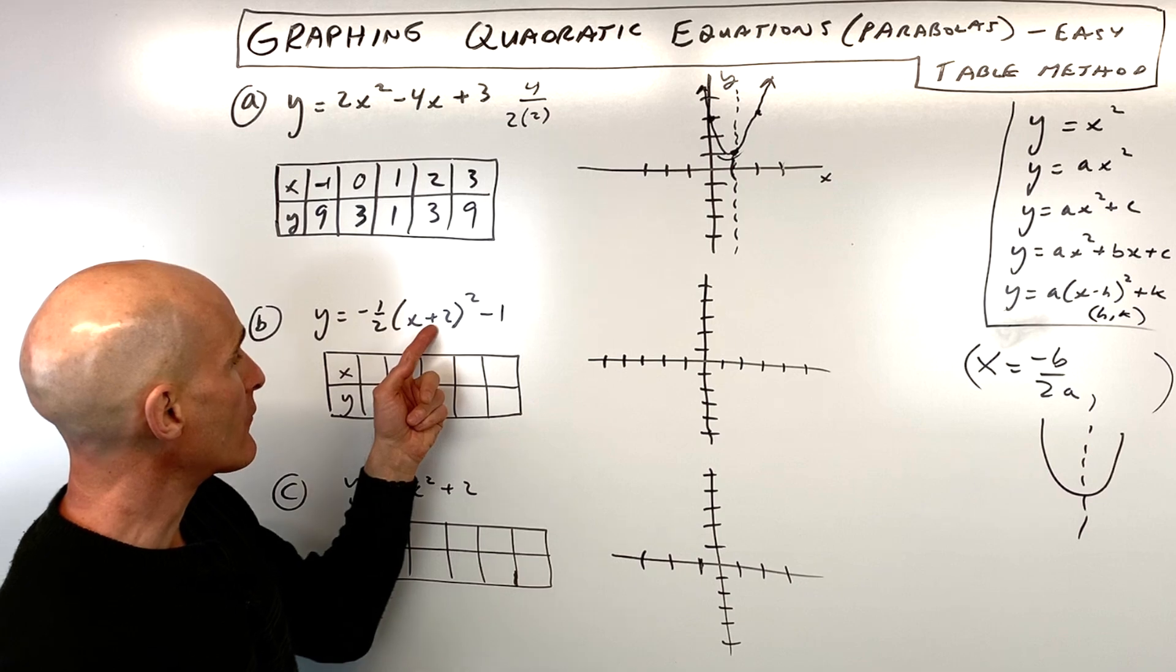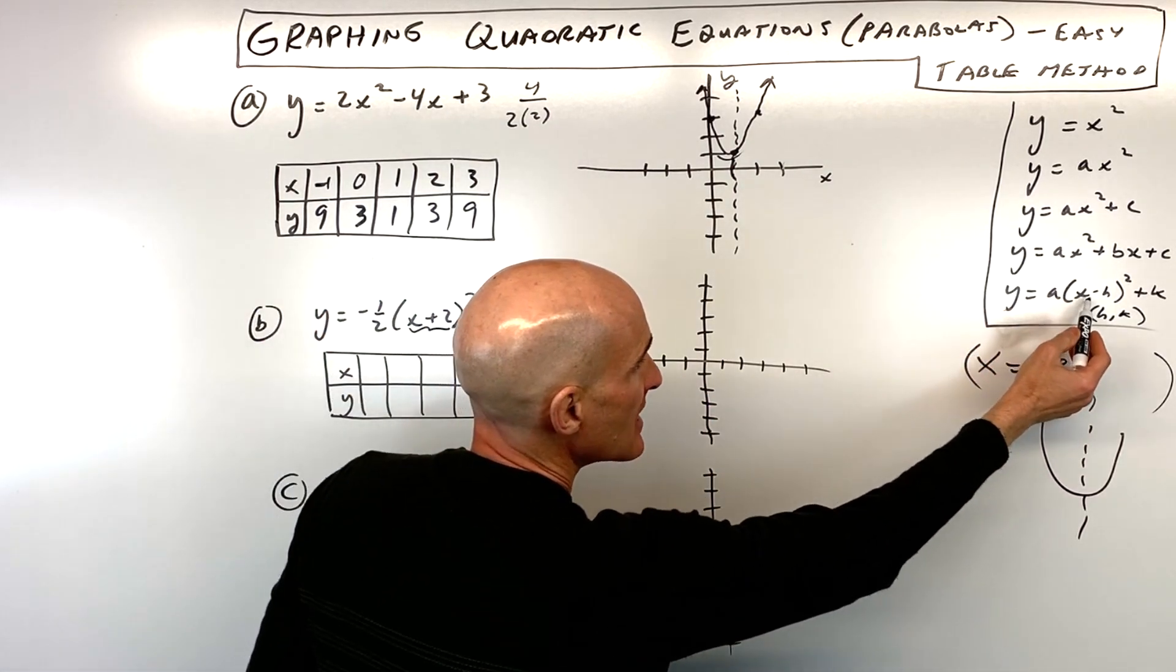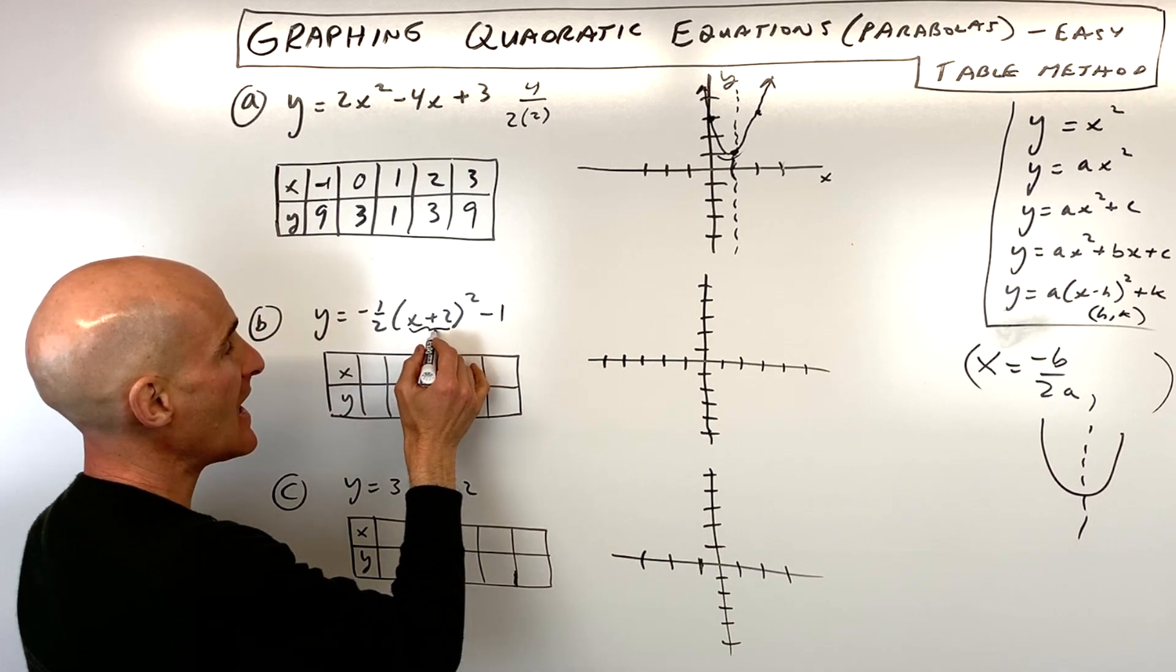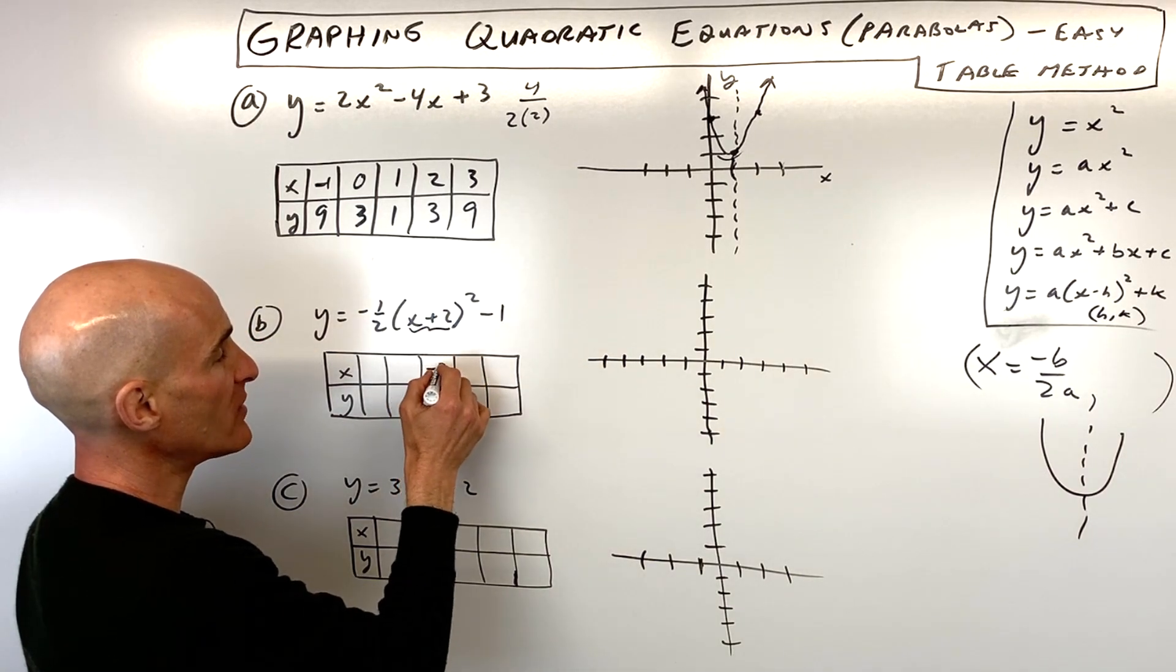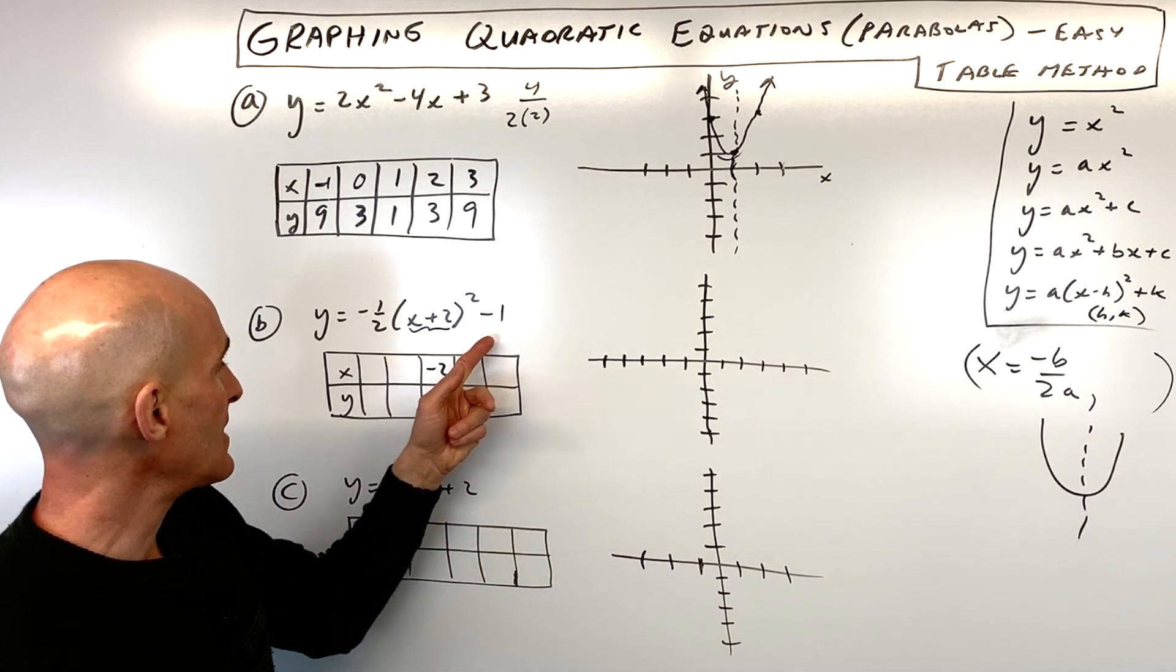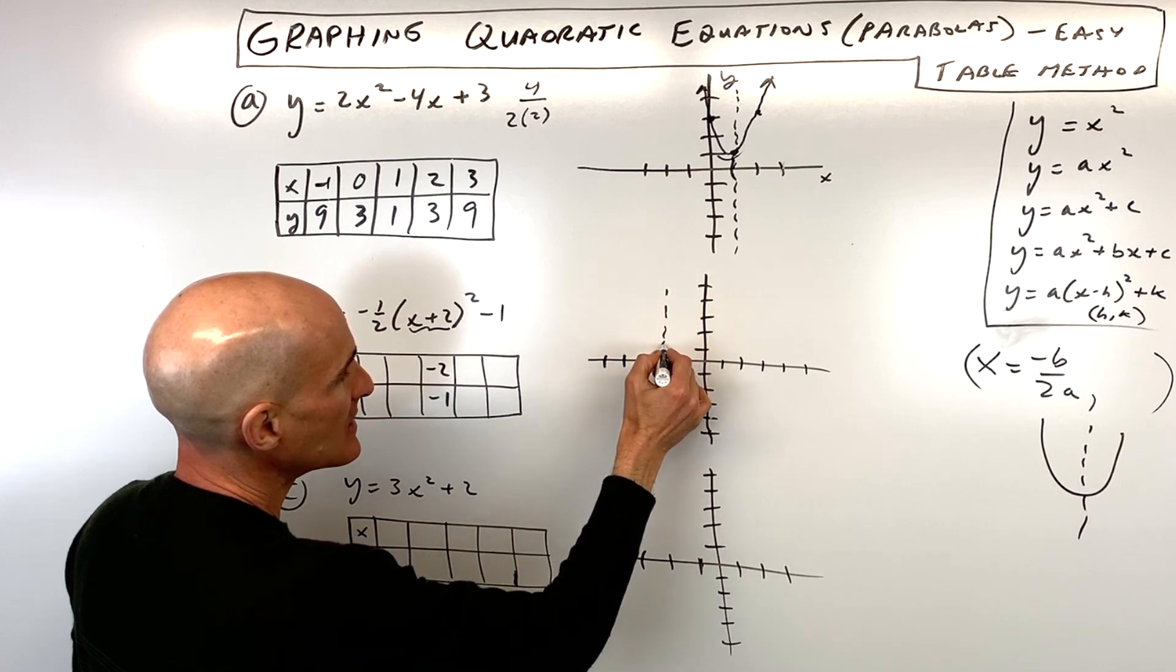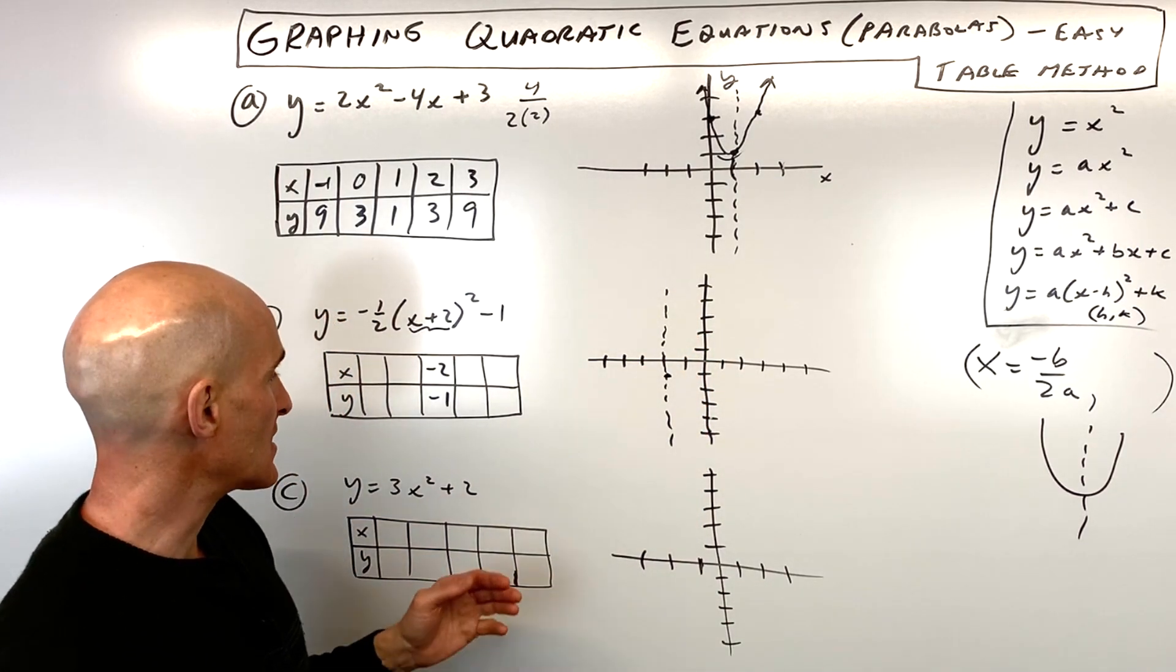So you can see right away, our vertex is going to be not positive 2, it's the opposite. See how it's x minus h? So it's actually going to be negative 2, negative 1. Just remember the one that's grouped with the x, it's the opposite sign. This one's going to be the same sign. So that means our vertex is here at (-2, -1).